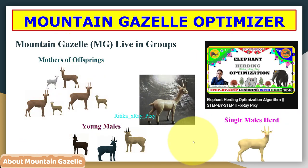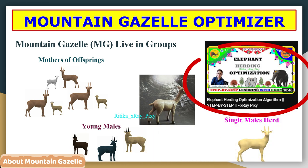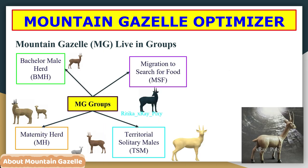Mountain gazelles establish their territories at significant distances from each other, similar to behavior discussed in the elephant herd optimizer. In the Mountain Gazelle Optimization algorithm, different mathematical models are used to simulate mountain gazelle social behavior.